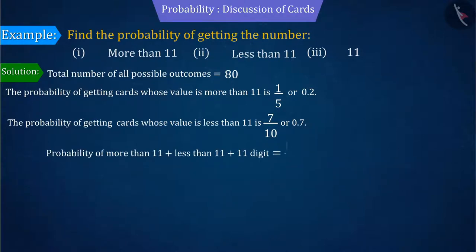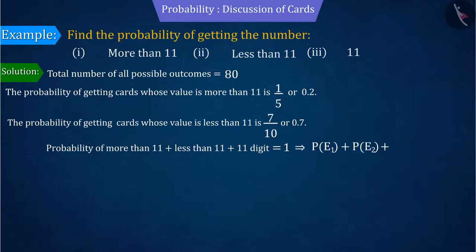Therefore, with the help of this, we can tell that the probability of getting cards with value 11 is 0.1.